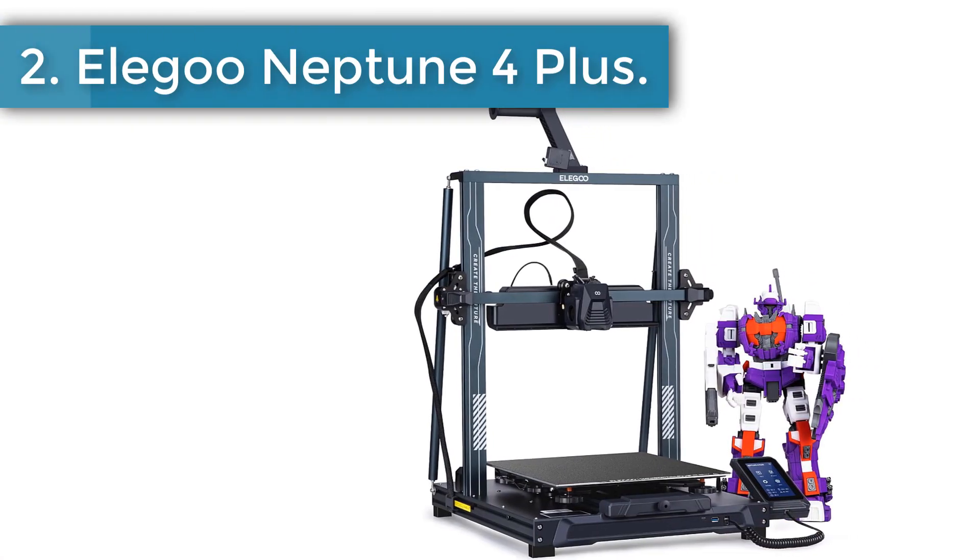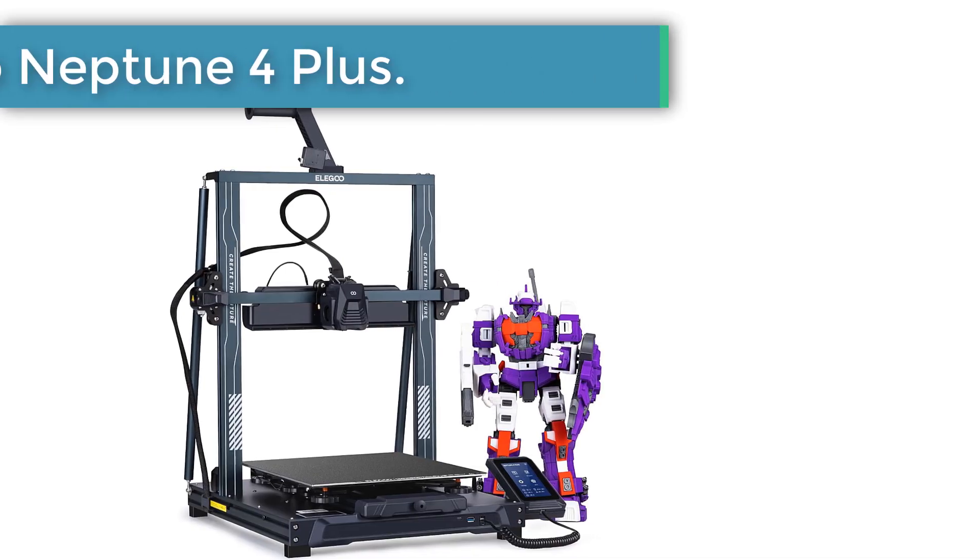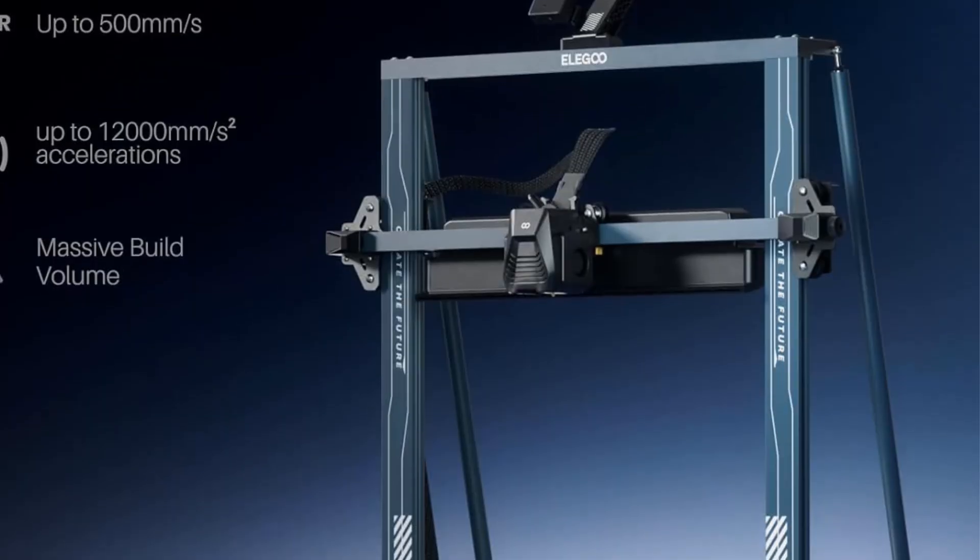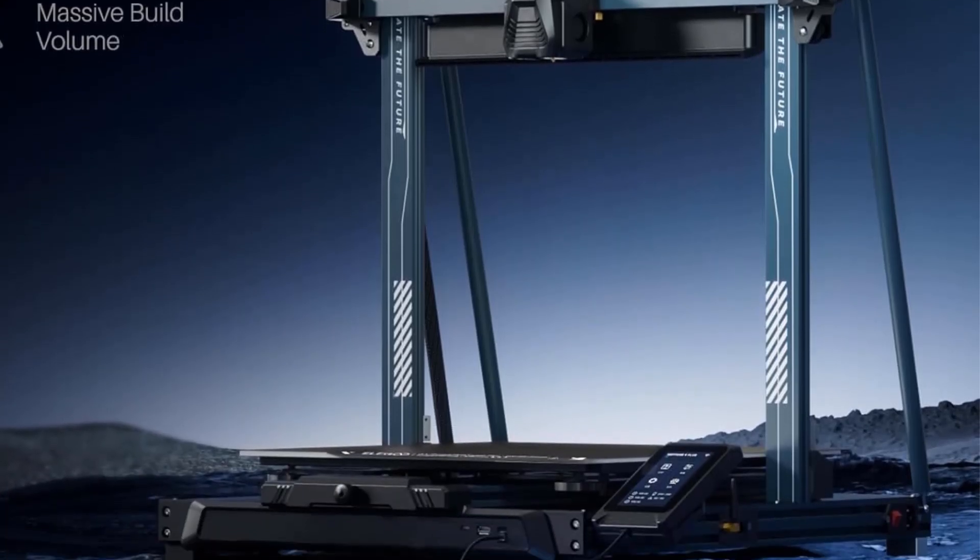Number 2. Elegoo Neptune 4 Plus. The Elegoo Neptune 4 Plus, $425, can produce exceptionally large prints for a sub-$500 3D printer, and in our extensive testing managed to produce generally very good quality objects with minimal problems.